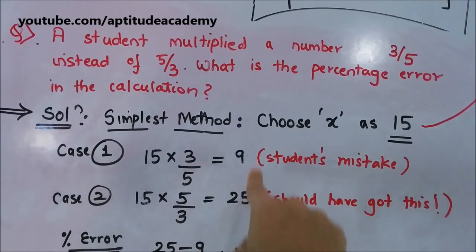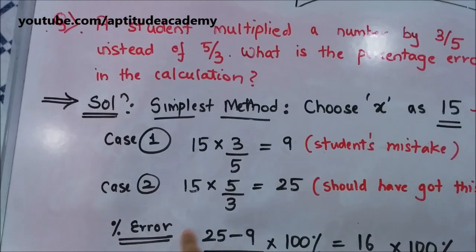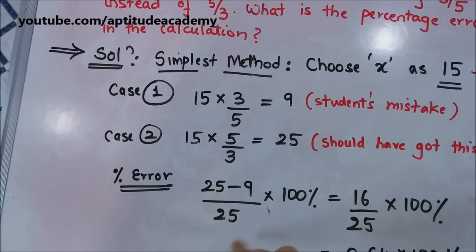He should have gotten 25, but he got 9. What is the percentage error? It's (25 - 9) divided by the original number.